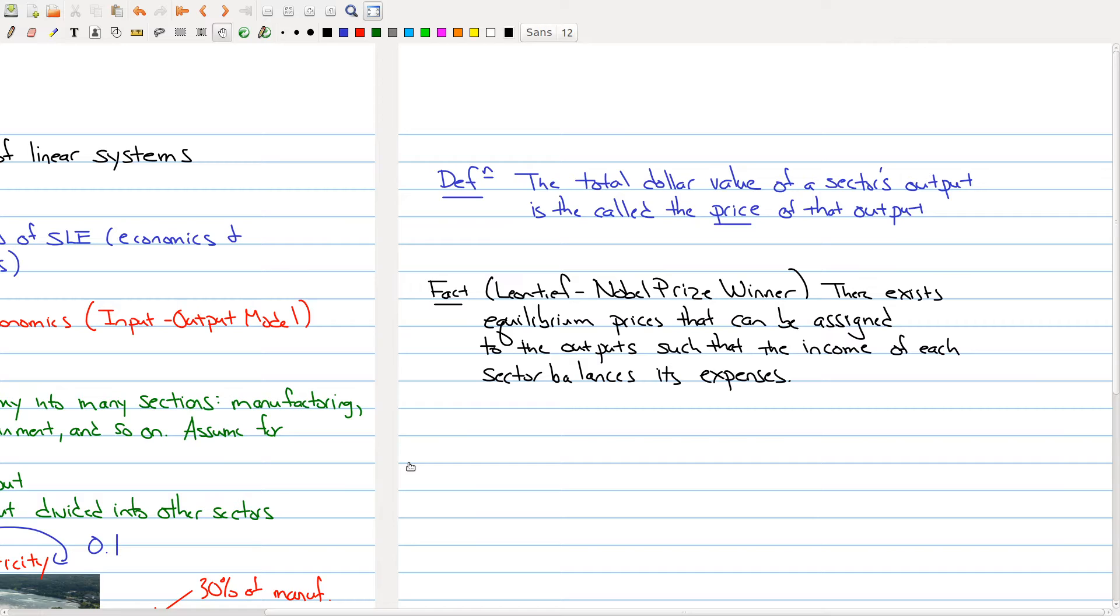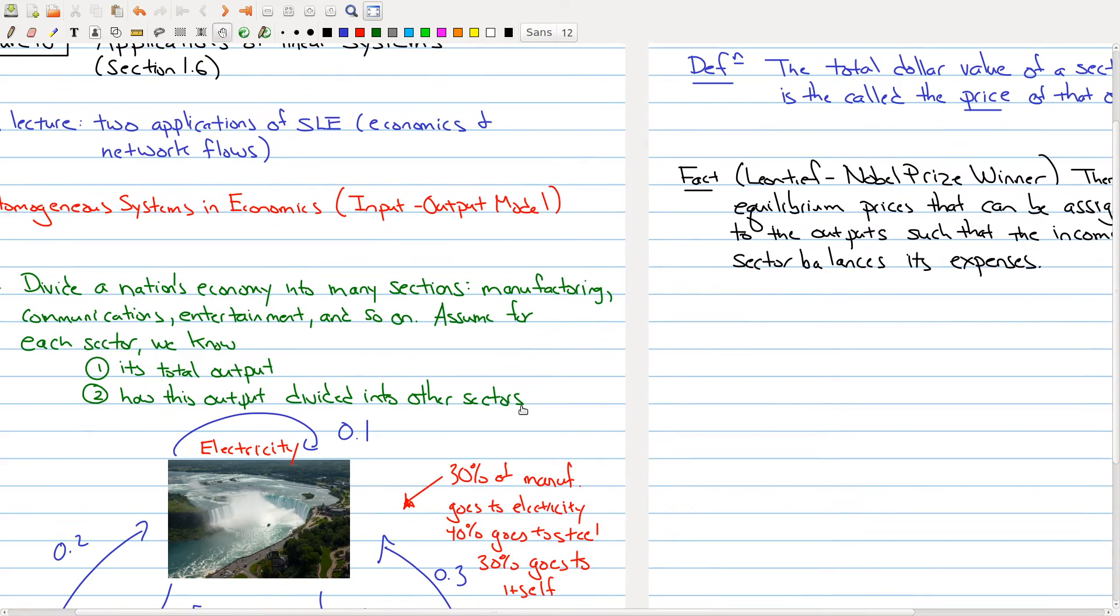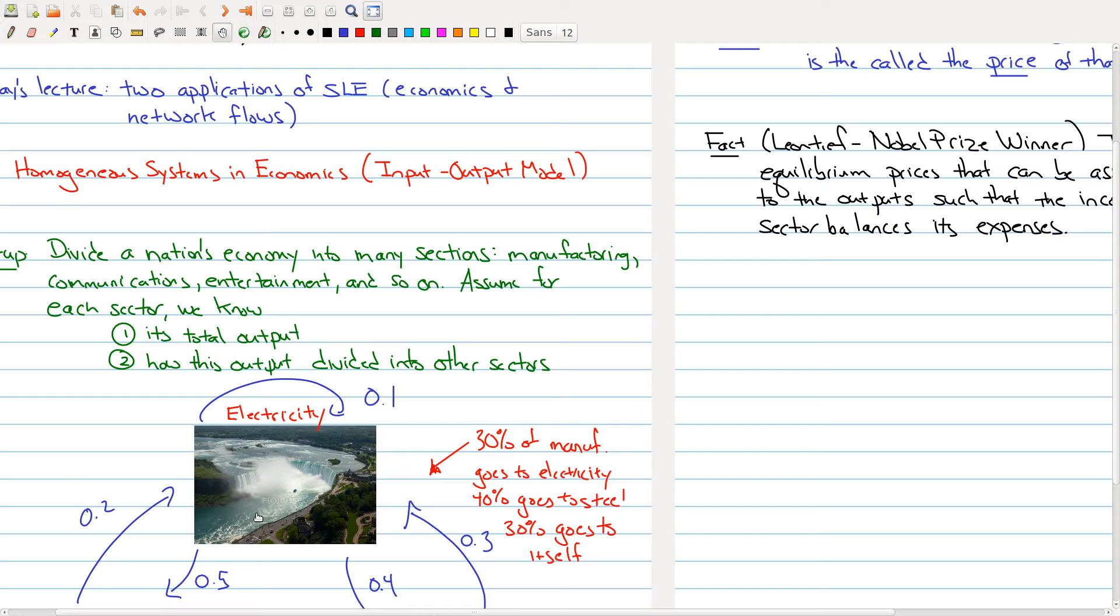So we will need some terminology from economics, and the terminology that we need is the price. The total dollar value of the sector's output is called the price of that output. So if we go back here, electricity, what we want to know is how much electricity is outputted. Say electricity outputs $10 million worth of goods. That means 10% of that $10 million goes back to electricity. 5% of that output, or 50% of that output goes to steel, and so on.